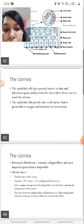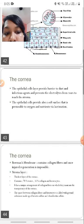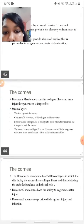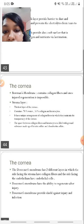Another thing to be noted here is that the epithelial cells are permeable to oxygen and nutrition via lacrimation. So the source of oxygen and nutrition of the outermost layer of the cornea is through the aqueous.